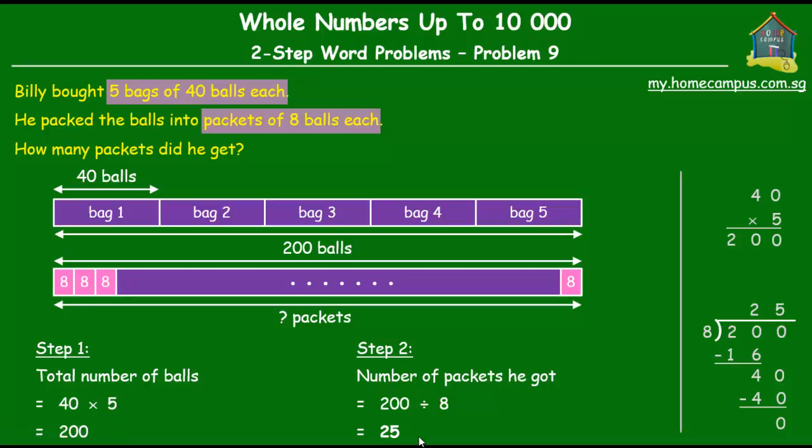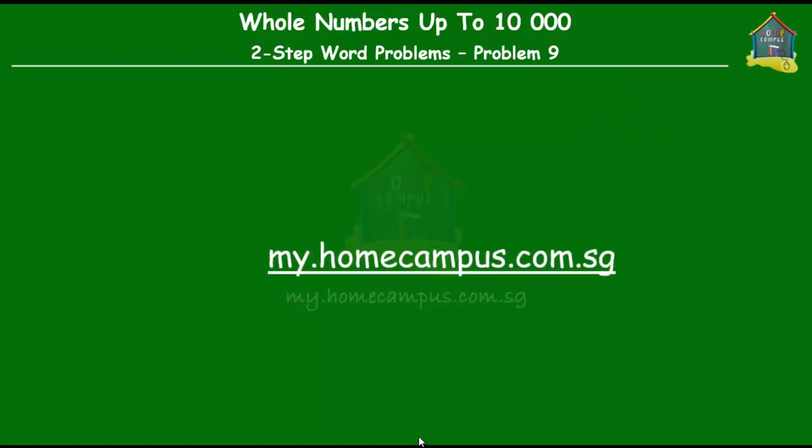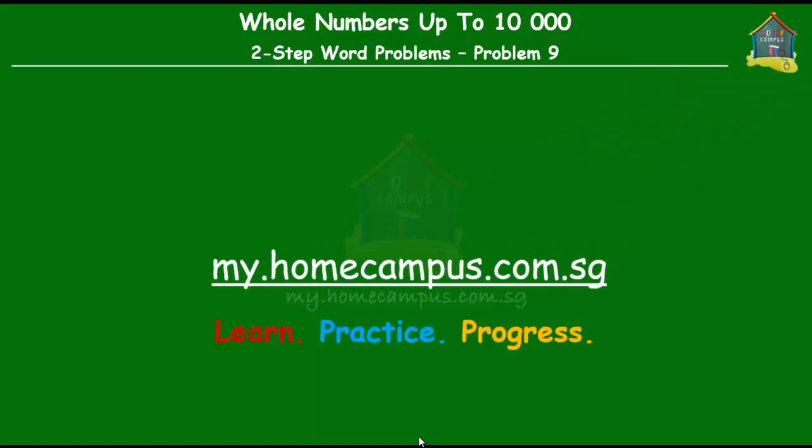And that's your answer. So the number of packets he got after repacking the five bags of 40 balls into packets of eight balls each is 25. Well, that brings us to the end of this tutorial. For more such questions, practice exercises and worksheets, visit this website my.homecampus.com.sg. This is Em signing up for now. Bye-bye.